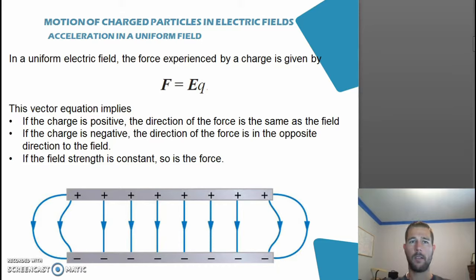In a uniform electric field the force experienced by a charge is given by the formula F equals EQ. Being a vector equation this implies if the charge is positive, the direction of the force is the same as the field. If the charge is negative, the charge will be travelling in the direction opposite the field lines. The equation also implies that if the field strength is constant, so is the force.